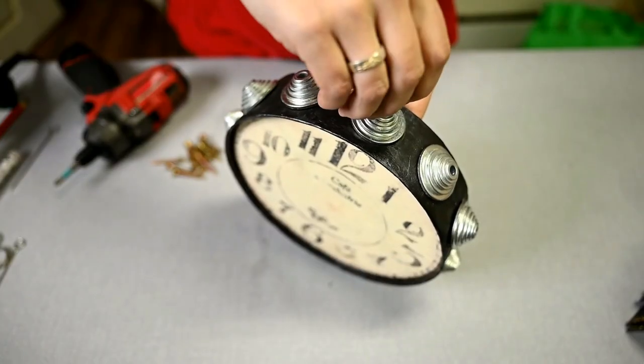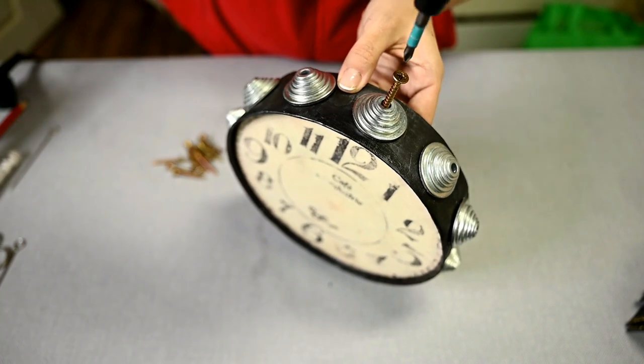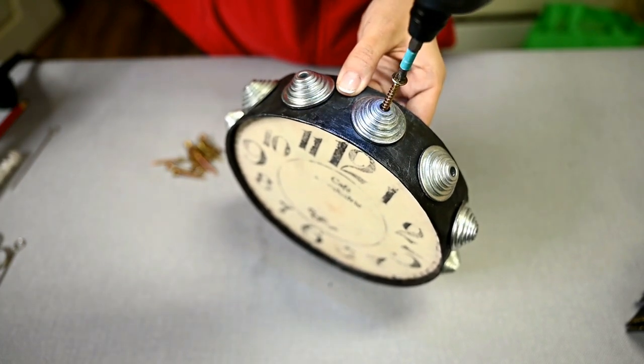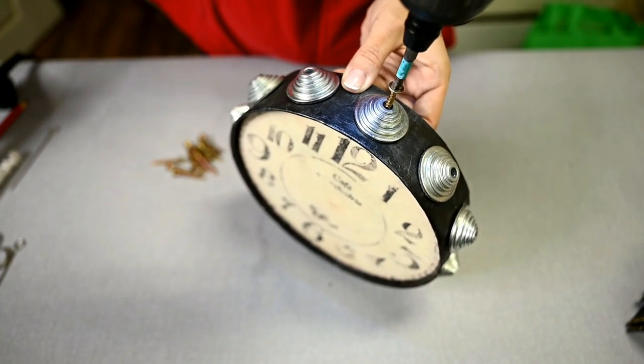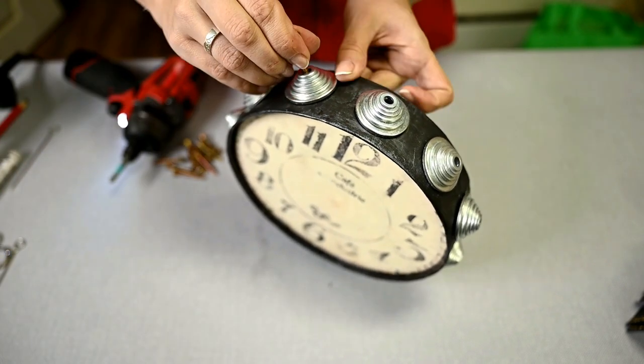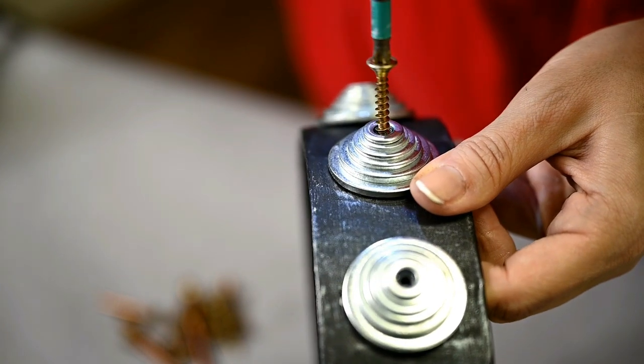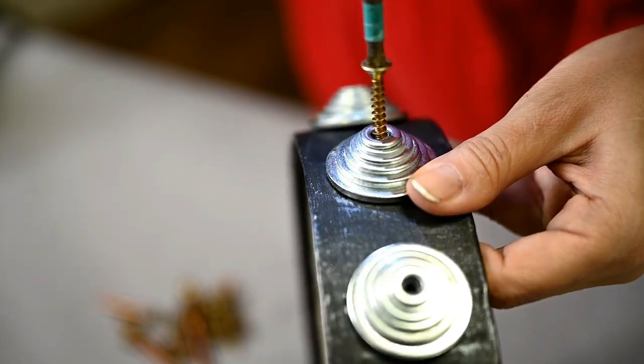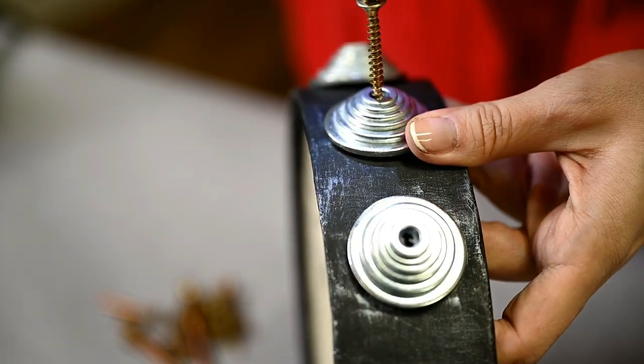Then I'm connecting all the details of the clock together. First I'm twisting a screw into the tops of all the pyramids and unscrewing it back to mark the holes in the ring where I'll twist screws from the inside to get into those pyramids.